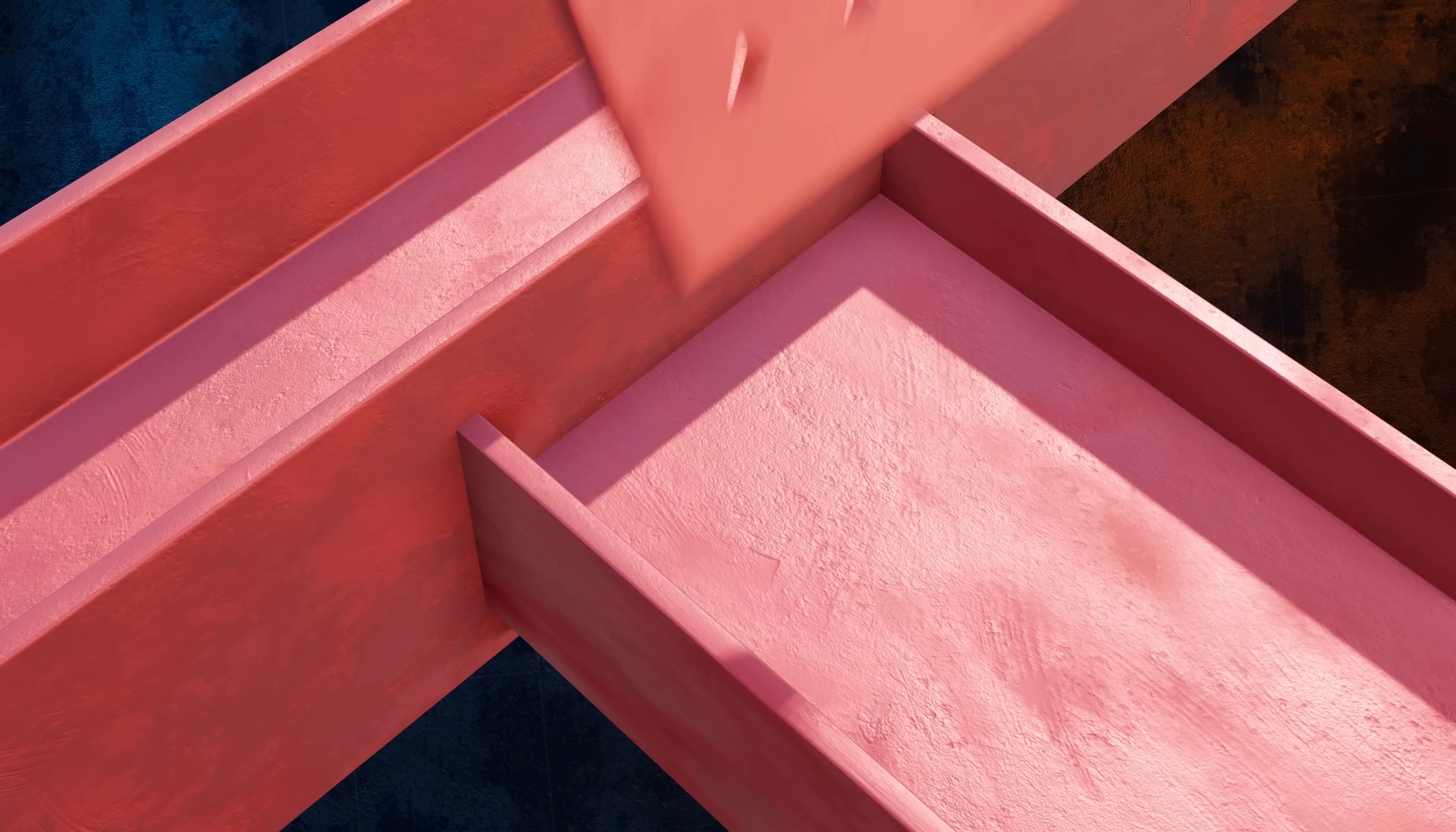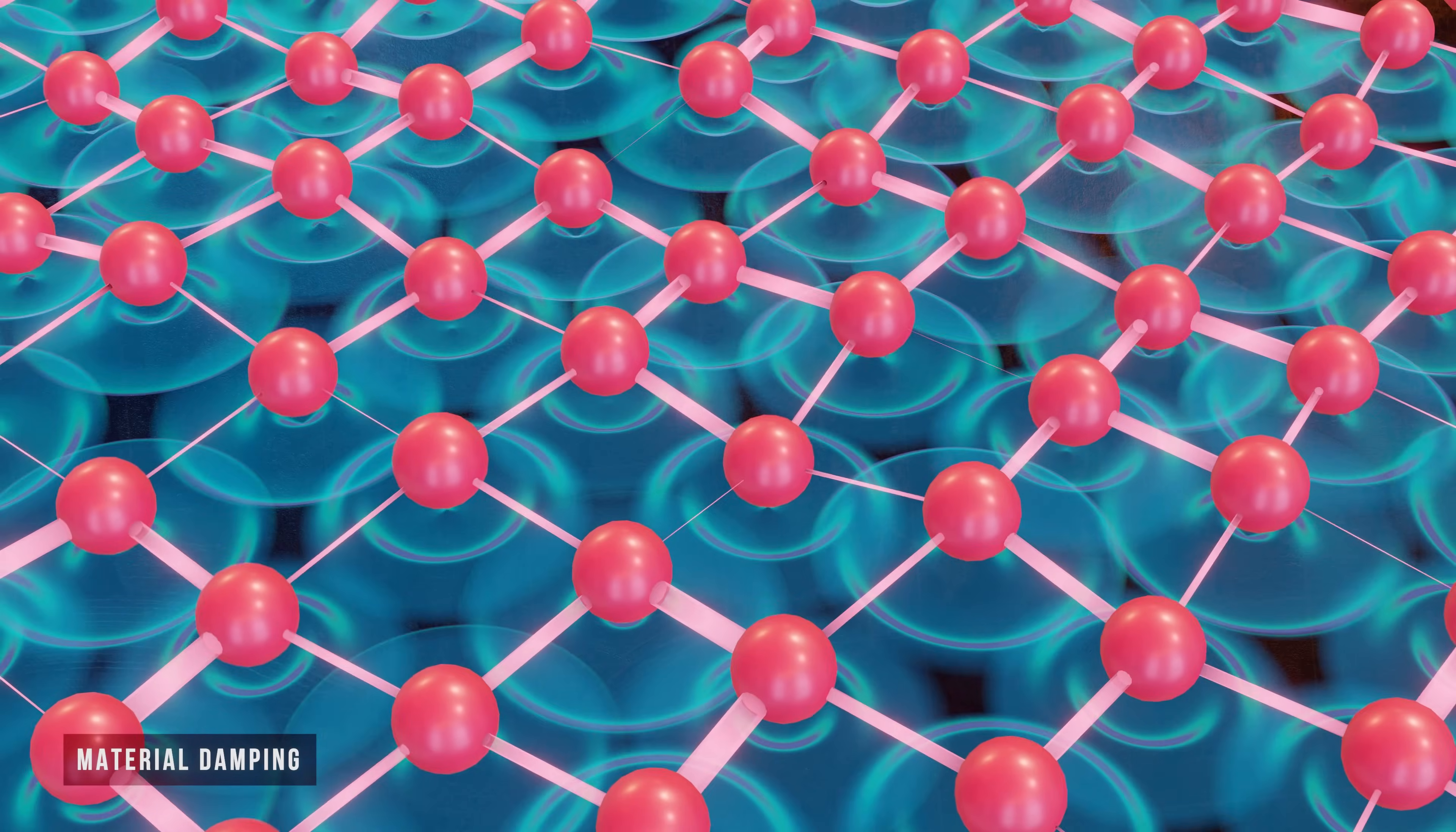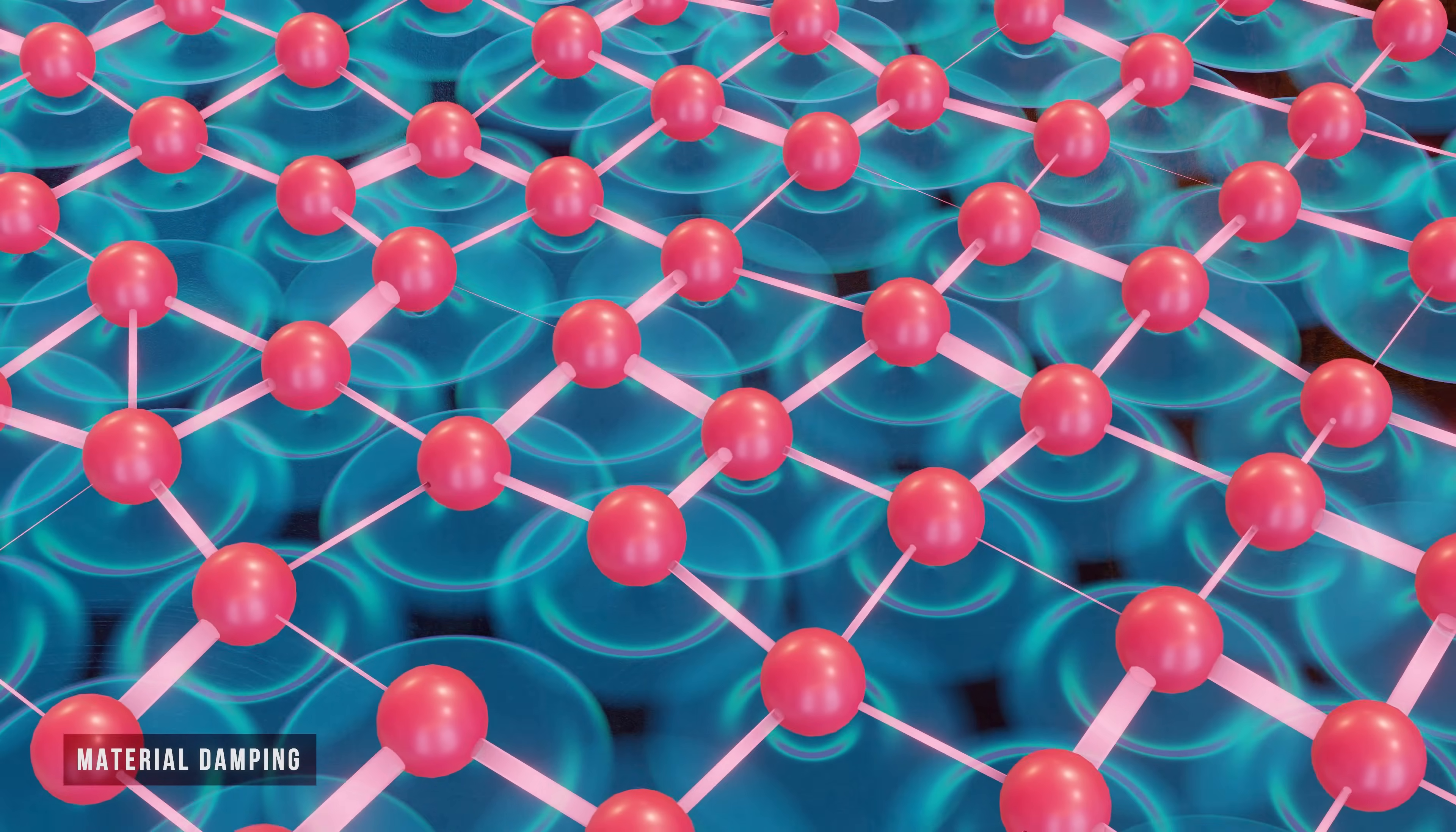With structural damping, energy in a vibrating structure is dissipated due to the relative motion of components at structural joints. And material damping is damping provided by the material itself, where energy dissipates in a vibrating material due to interactions occurring at the molecular level.